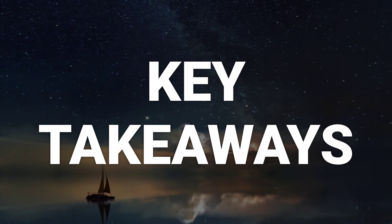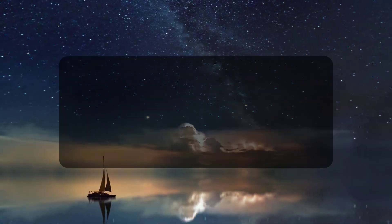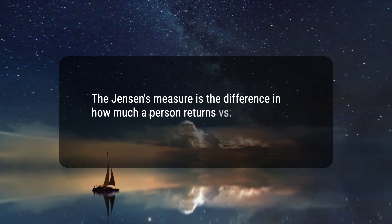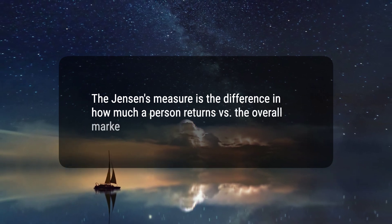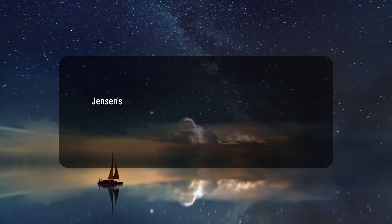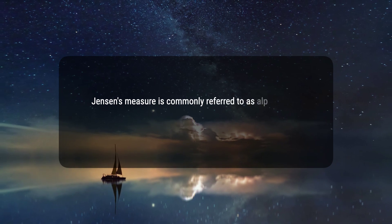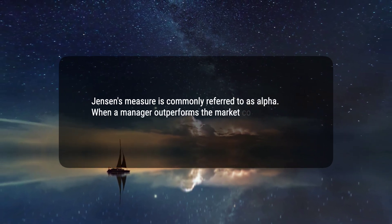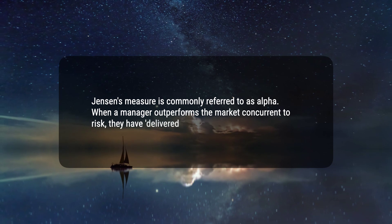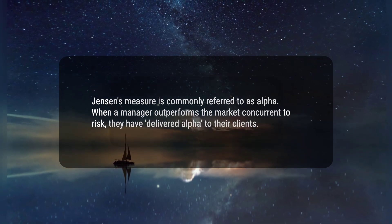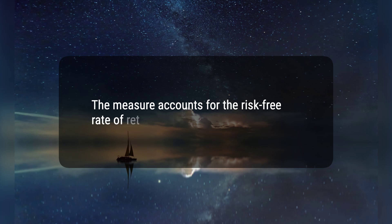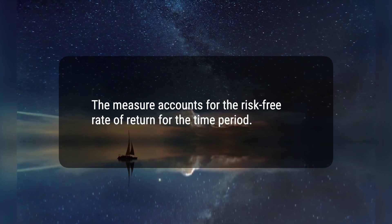Here are three key takeaways. 1. The Jensen's Measure is the difference in how much a person returns versus the overall market. 2. Jensen's Measure is commonly referred to as Alpha. When a manager outperforms the market concurrent to risk, they have delivered Alpha to their clients. 3. The measure accounts for the risk-free rate of return for the time period. Hope this would help, thanks for watching.